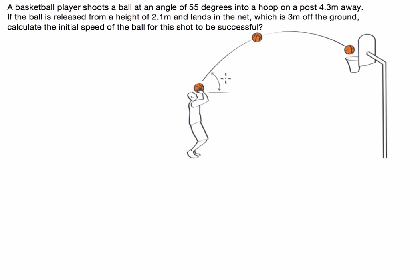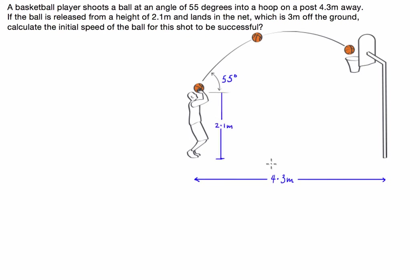So let's write these bits of information in. We have this angle here which is going to be 55 degrees, and we know that the hoop is 4.3 metres away. The ball is released from a height of 2.1 metres and lands in the net which is 3 metres off the ground. Calculate the initial speed of the ball for this shot to be successful.